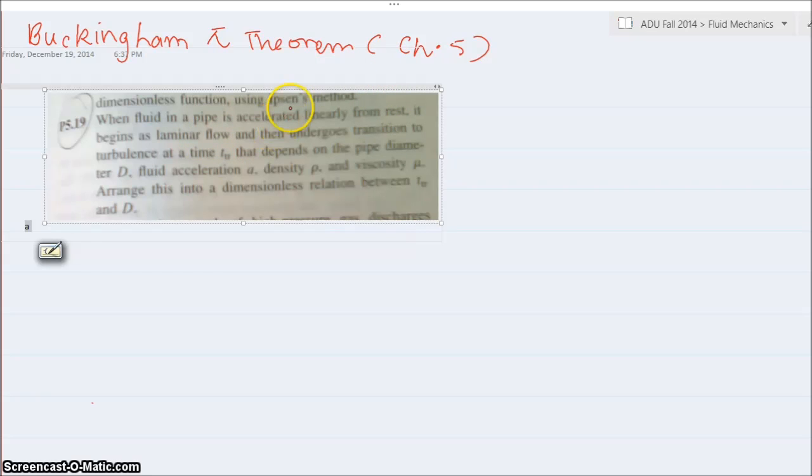So the question says when fluid... by the way sorry for the look of the question, it's from my mobile picture. Back to the question, when fluid in a pipe is accelerated linearly from rest, it begins its laminar flow and then undergoes transition up to turbulence at a time...